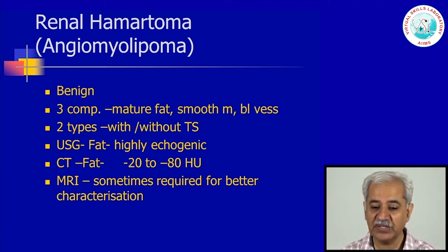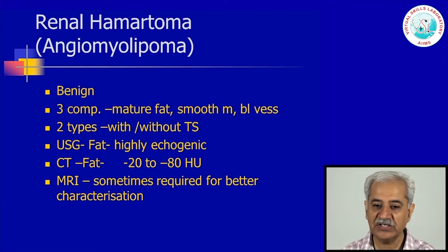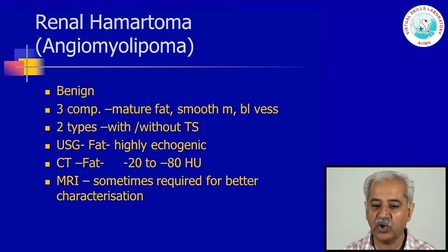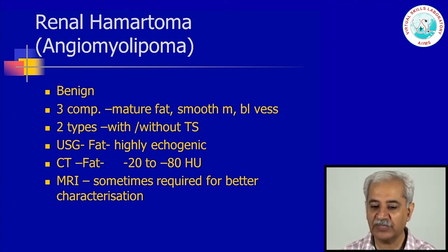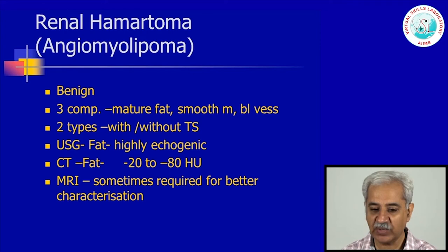On CT scan, there may be a good amount of fat that may be seen, giving Hounsfield values of minus 20 to minus 80, and you would be certain you are dealing with angiomyolipoma. This is one renal benign tumour which can be diagnosed more or less categorically on imaging and therefore has to be treated as a benign tumour. However, some patients have a fat-poor angiomyolipoma known as lipopenic angiomyolipoma, which may not be very certainly diagnosed on either ultrasonogram or CT scan. In borderline situations, an MRI with special sequences is required.